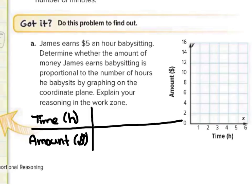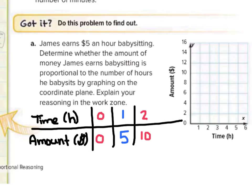Filling in our table: after 0 hours, James has made no money. After 1 hour, earning $5 per hour, he's made $5. After 2 hours, another $5, so that's $10. After 3 hours, another $5 gets us $15. And finishing with 4 hours, another $5 would be $20.